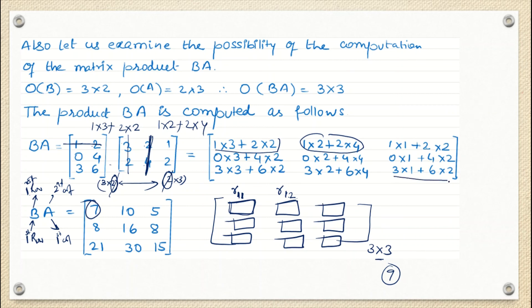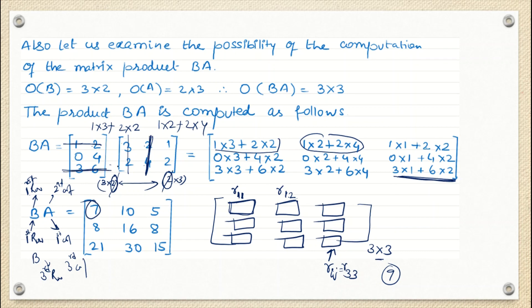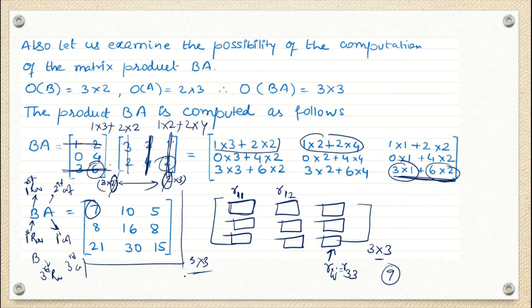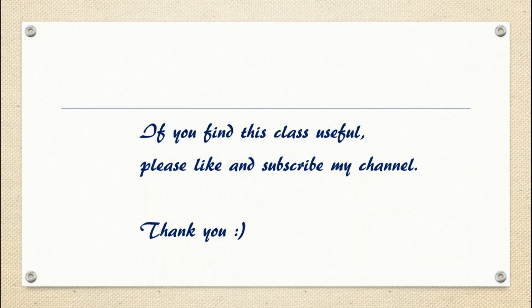For the element at position R33, I take the third row of B and the third column of A: 3 into 1, plus 6 into 2, giving the answer. The resultant matrix BA is a 3 cross 3 matrix. This is how we perform matrix multiplication. If you find this class useful, please like and subscribe to my channel. Thank you.